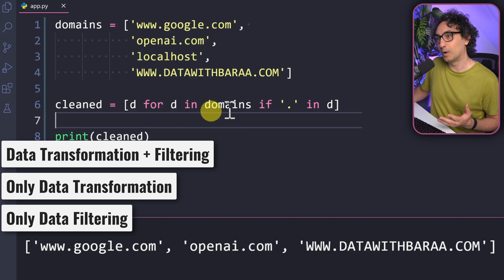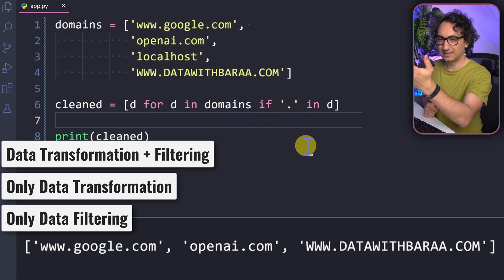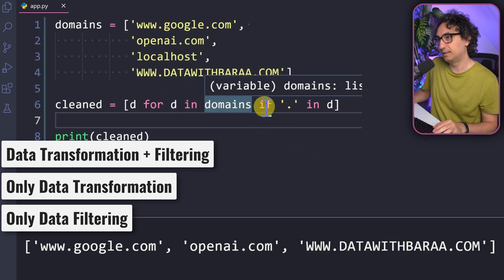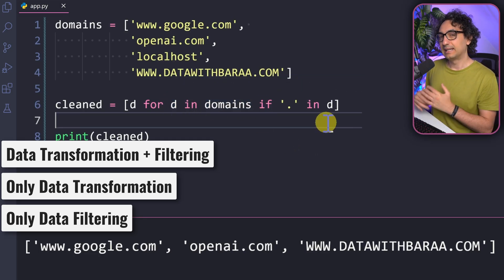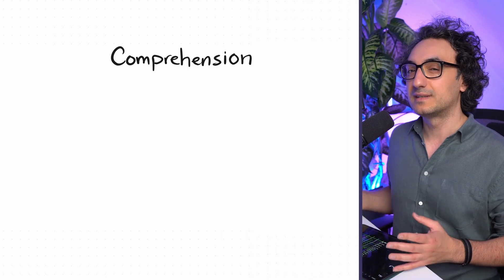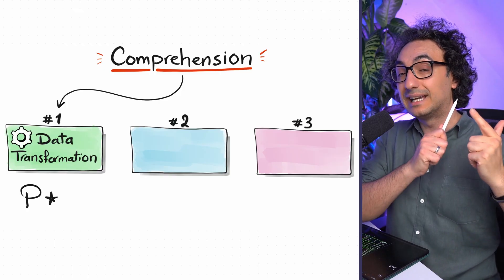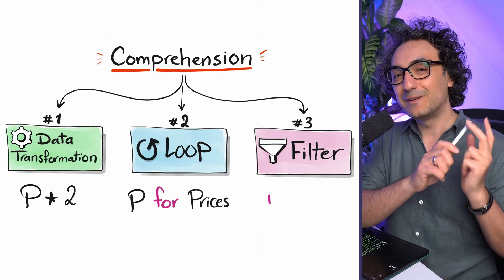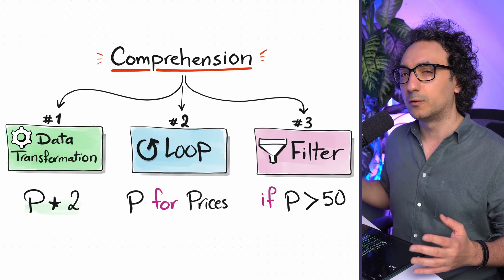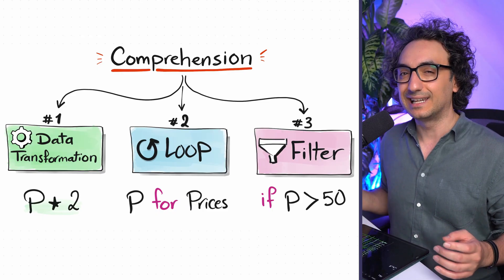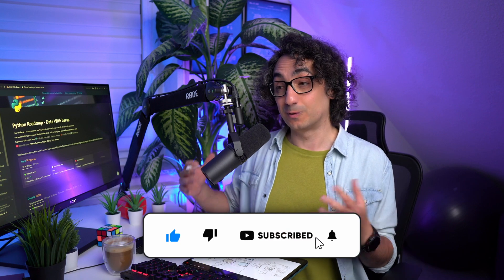At first, list comprehensions like 'd for d in domains' can look confusing, but once you understand the three blocks and what happens behind the scenes, everything clicks. To recap: list comprehensions are the coolest feature in Python. You loop through a list, optionally filter the data, and apply a data transformation — all in one line. This is very powerful for data analysis and data engineering. If you liked this video, support the channel by subscribing, liking, and commenting. Thank you for watching!